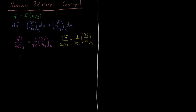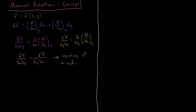There is a theorem in multivariable calculus which is very important: it shows that these types of mixed partial derivatives are equal to each other. If I differentiate f with respect to y and then with respect to x, that's equivalent to differentiating with respect to x and then with respect to y. So mixed partial derivatives are equal — equality of mixed partial derivatives — and it is this entire concept on which Maxwell relations are founded.